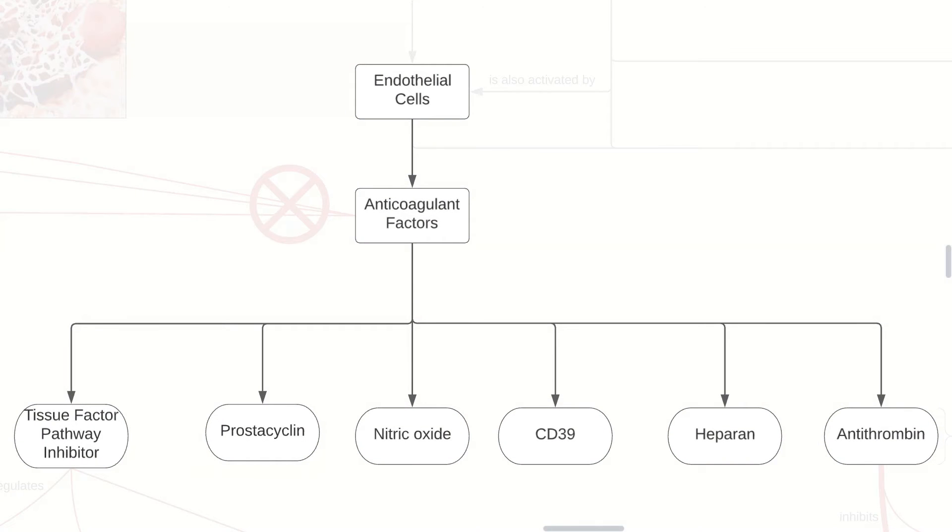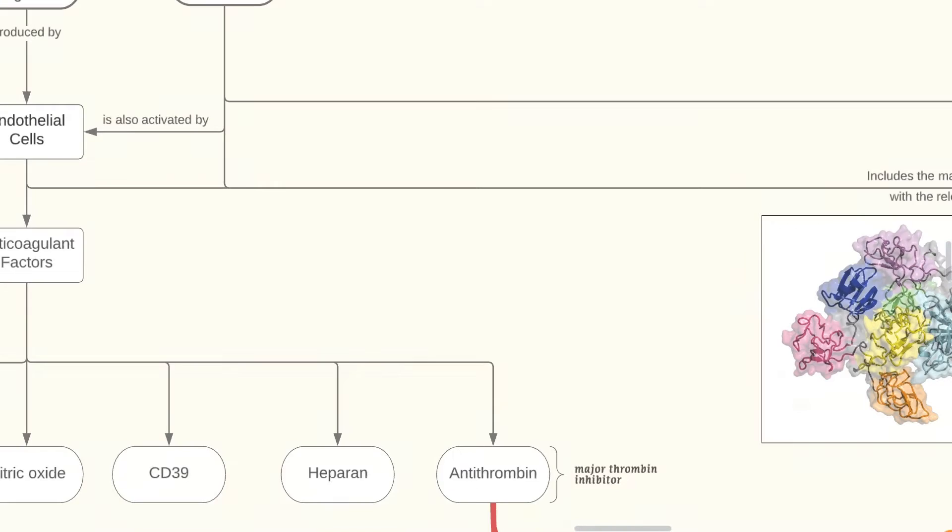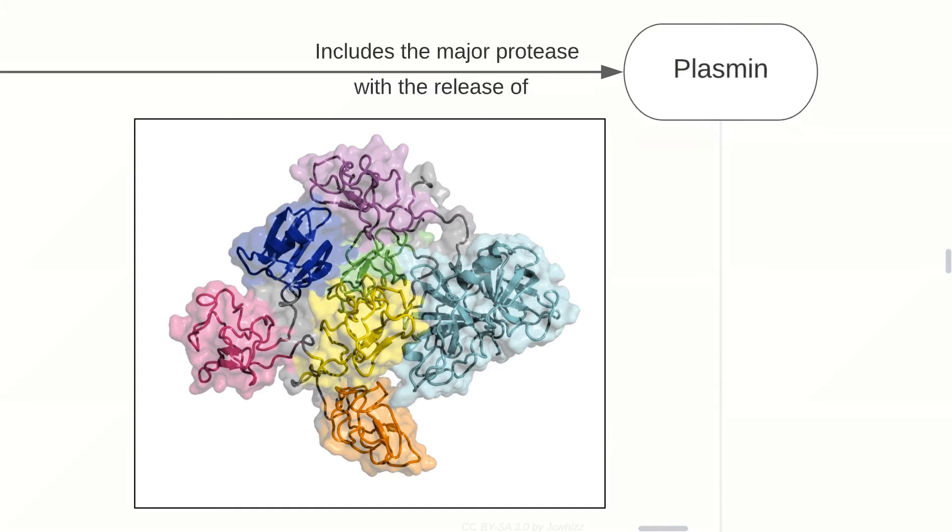Now that we have discussed the anticoagulant factors, let's go back to the endothelial cells. These complexes include the major protease plasmin, and the release of plasmin. What plasmin does will be discussed shortly.